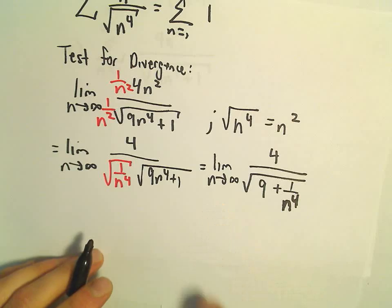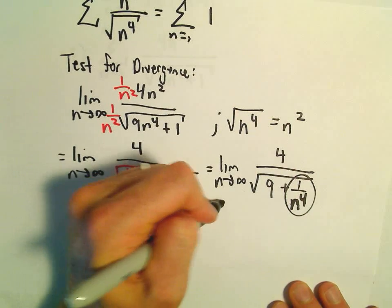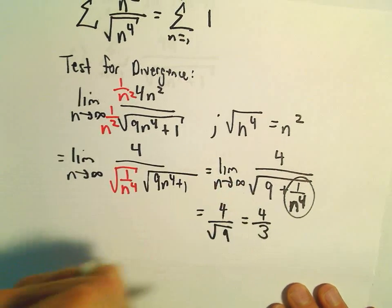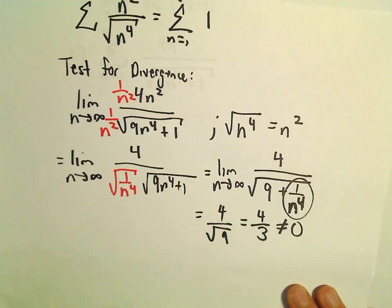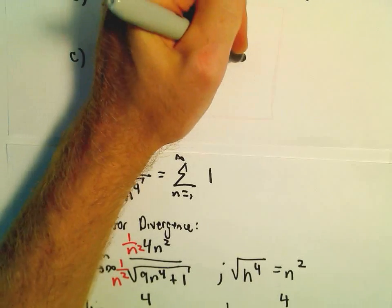Well, as n goes to infinity, the 1 over n to the 4th is going to go to 0. So we're going to be left with 4 over root 9, or 4 thirds. And since this is not equal to 0, it says our original series automatically diverges.